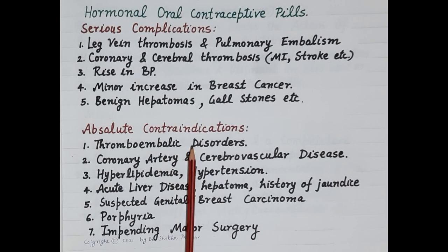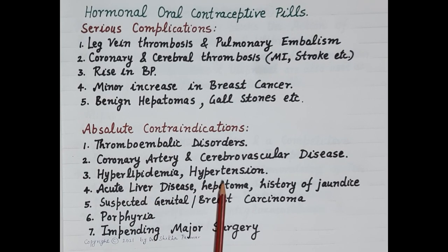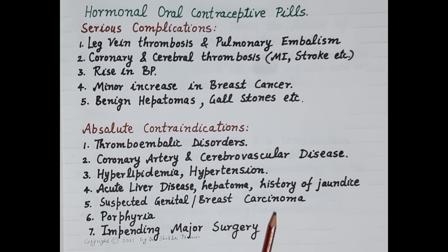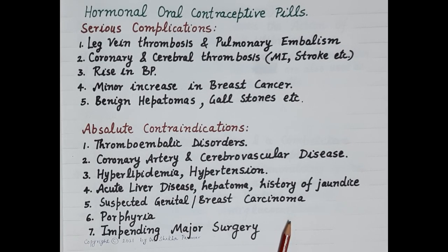Absolute contraindications of hormonal oral contraceptive pills include thromboembolic disorders, coronary artery and cerebrovascular disease, hyperlipidemia, hypertension, acute liver disease, hepatomas, history of jaundice, suspected genital or breast carcinoma, porphyria, and impending major surgery. Note that the information provided is meant only for students from an examination point of view; kindly consult your physician for clinical use.